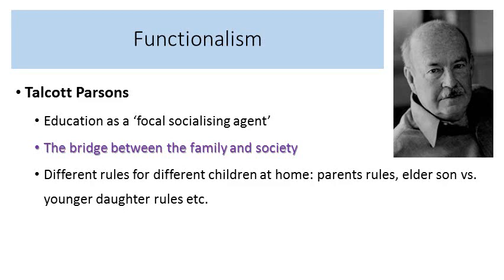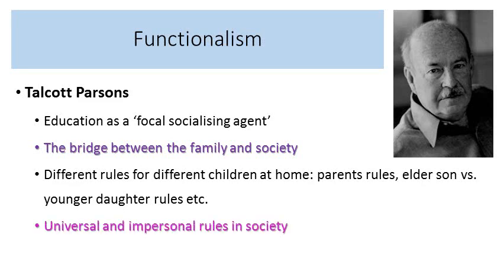There are different rules for different children at home. For example, parents may have their own rules regarding what the eldest is able to do versus what the youngest can do — the eldest sibling might stay up later, receive more pocket money, or go out with friends, whereas younger siblings might go to bed earlier or only engage in supervised play. Whereas in education, rules are universal and impersonal — they apply to everyone equally. It doesn't matter if you are in Year 7 or Year 11; everyone has to wear uniform and turn up at the same time.